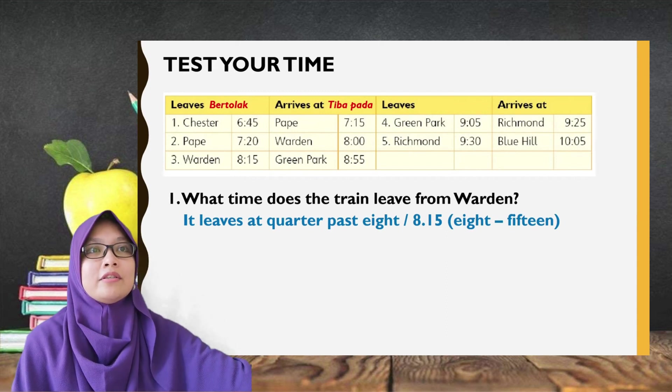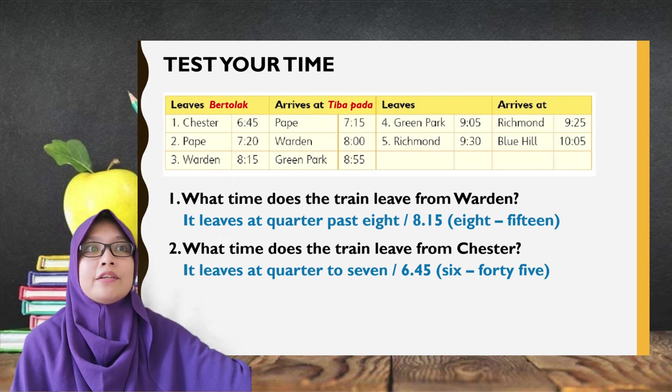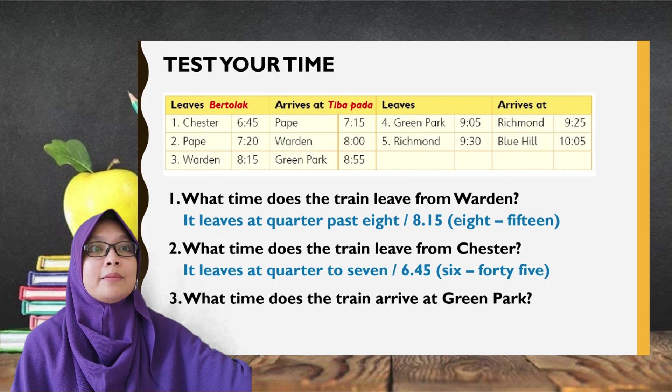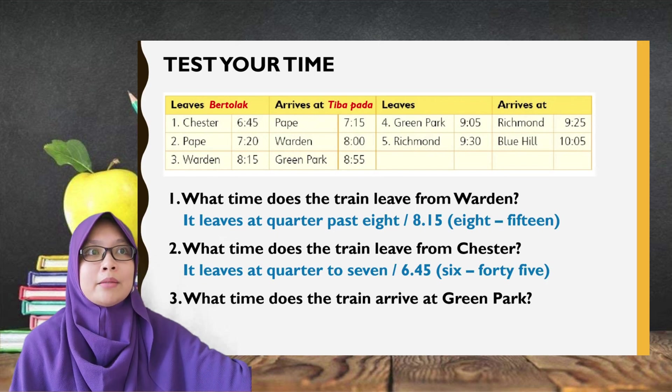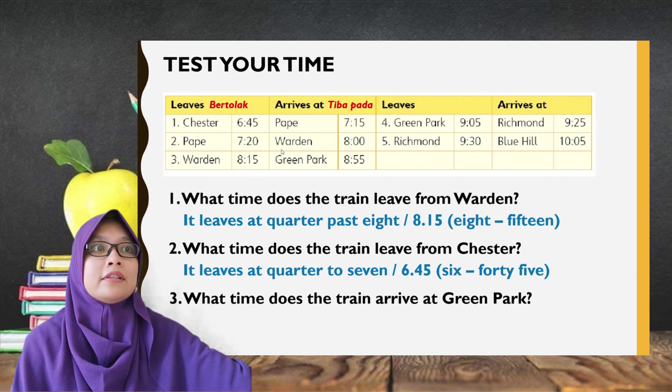Okay, we can try this question. What time does the train arrive at Green Park? Bermaksud, pada pukul berapakah kereta api tiba di Green Park? Okay, look at the timetable. Tengok jadual. Find Green Park. Okay, cari Green Park.